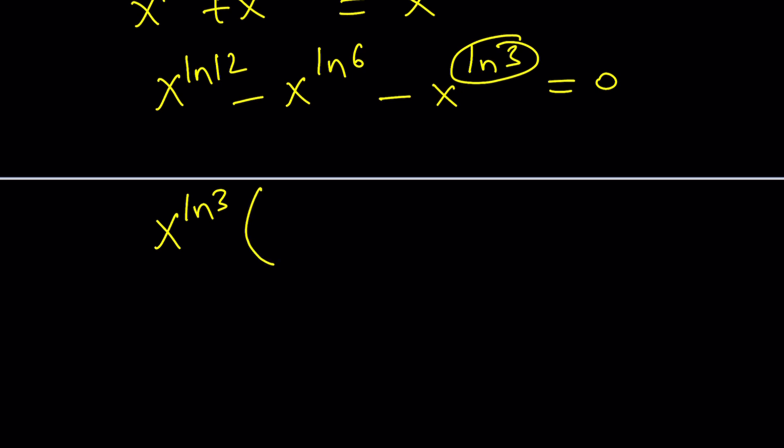Now, notice that if x to the power ln3 happens to be 0, then we do have a good solution, because x will be 0 from there. Do you think that's going to work? Maybe. And at this point, you can think, if x equals 0, is that a solution? You can always test it out.